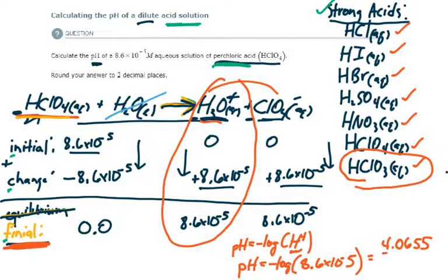That gives me a pH of 4.0655 and rounded to two decimal places, that would be 4.07. So, this would be my final answer.